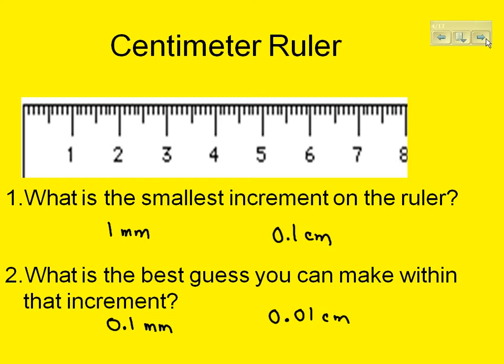If you're using a centimeter ruler, you should be reporting your value to one decimal place if you're reporting it in millimeters, and to two decimal places if you're using centimeters.